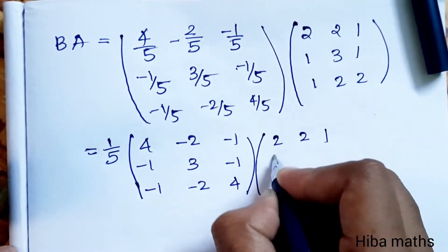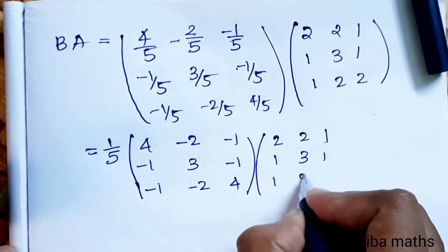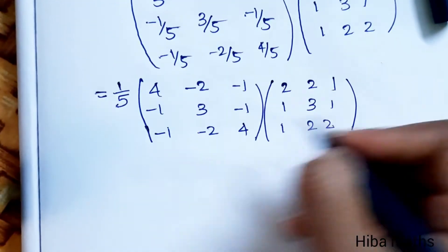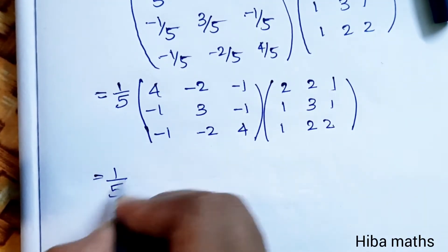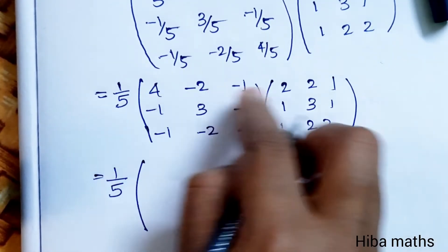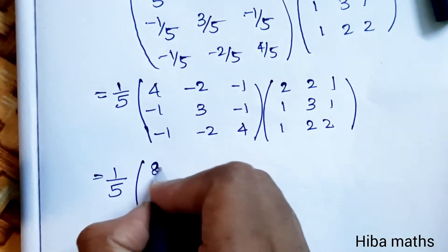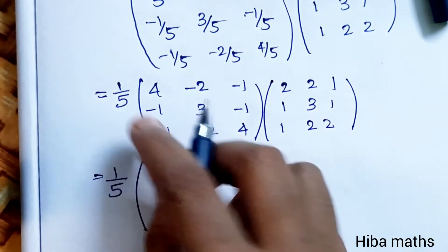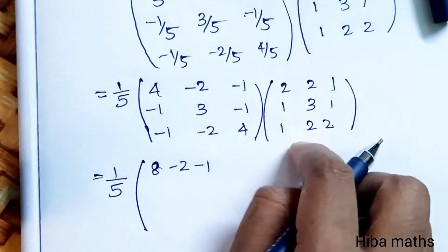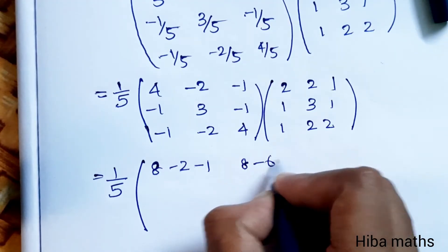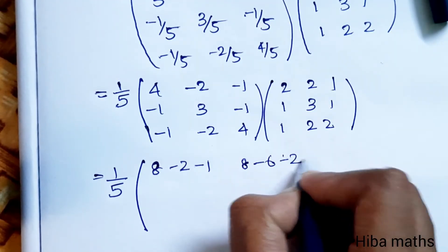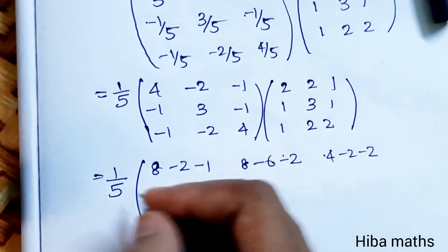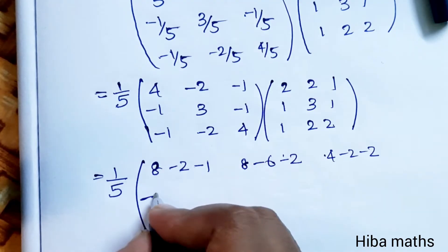Now solve: 1/5 into first row — 4 twos are 8 minus 2 minus 1. First row second column: 4 twos are 8 minus 6 minus 2. Then 4 minus 2 minus 2. Second row: minus 2 plus 3 minus 1; minus 2 plus 9 minus 2; minus 1 plus 3 minus 2.